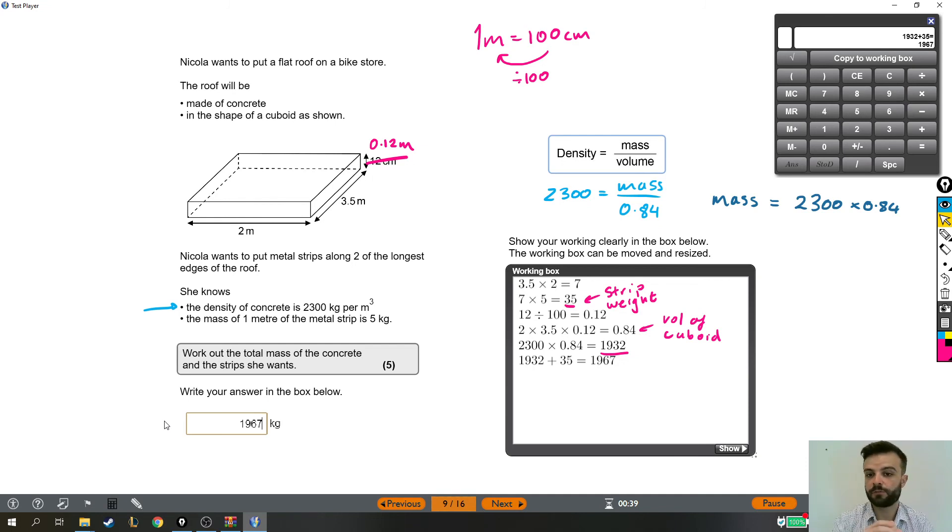After that, it does start getting harder. So you'd have to spot that you've got to turn the centimeters into meters to start working out the volume. Then you've got to know that you do base times width times height to find the volume of a cuboid. And then the really nasty bit is using that density formula to find the mass when you've got the density and the volume. But hopefully one of those ways of explaining made sense. I hope that helped. Tricky question. I suppose on to the next one.